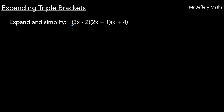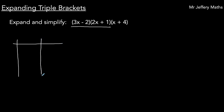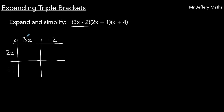The easiest way to do this is to start by multiplying the first two brackets together. So we're going to multiply 3x minus 2 by 2x plus 1. The way that I like to do this is by drawing a multiplication grid. I'm going to write across the top that first bracket, 3x minus 2, and then down the side the other bracket, 2x plus 1, and then multiply each of these terms by each other.